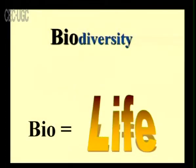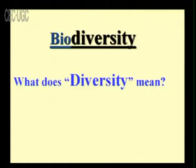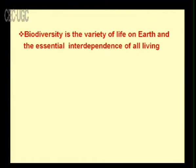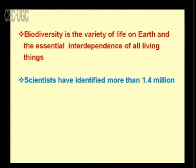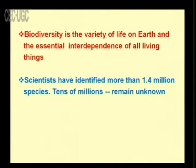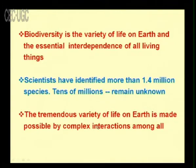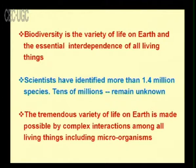Bio means life, and therefore biodiversity is the diversity in life — the diversity of plant and animal species existing in the present environment. Biodiversity is the variety of life on earth and the essential interdependence of all living things. Scientists have so far identified more than 1.4 million species, and tens of millions of species are still unknown. The tremendous variety of life on earth is made possible by complex interactions among all living things, including microorganisms.